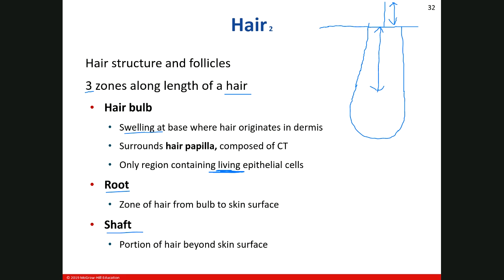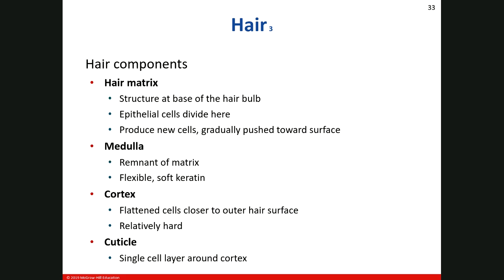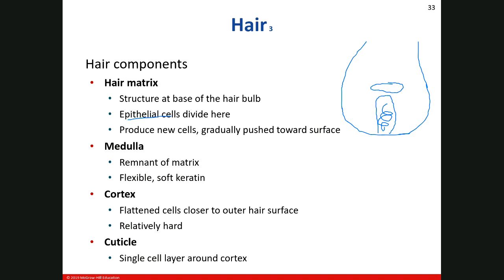Let's talk about components of our hair. We should be familiar with the hair matrix — that's down in the bulb. The hair papilla has the blood vessels that hang out there. Just above the papilla is the hair matrix, where we see those epithelial cells constantly dividing. Much like the epidermis, when cells were dividing in the stratum basale and the new cells moved towards the surface — that's what happens in the hair. The new cells will be pushed towards the surface of the skin, which is why we all have to get haircuts because the hair is growing out of the skin.